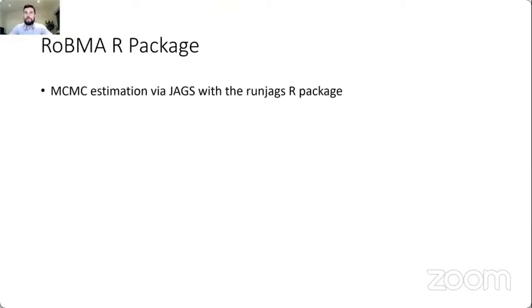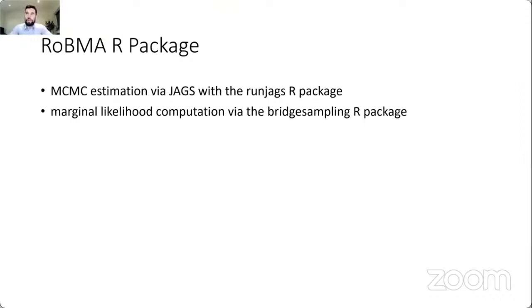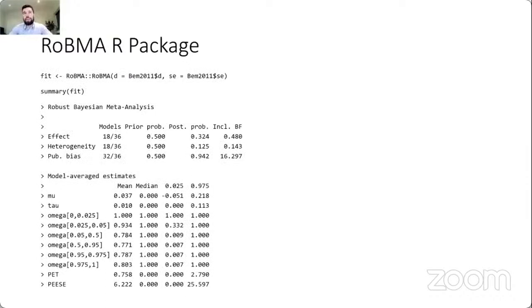To make this methodology available to practitioners, we implemented it in the RoBMA R package. The package uses MCMC sampling with diagnostics via the runjags R package, and then computes marginal likelihoods via the bridgesampling R package. The main things RoBMA does include model specification, plotting and summary functions, and additional auxiliary tools. You can use it to specify the default ensemble by simply supplying effect sizes and standard errors — for example, on the infamous Bem 2011 dataset. You fit the model with a simple call, and use the summary function to obtain a default summary.